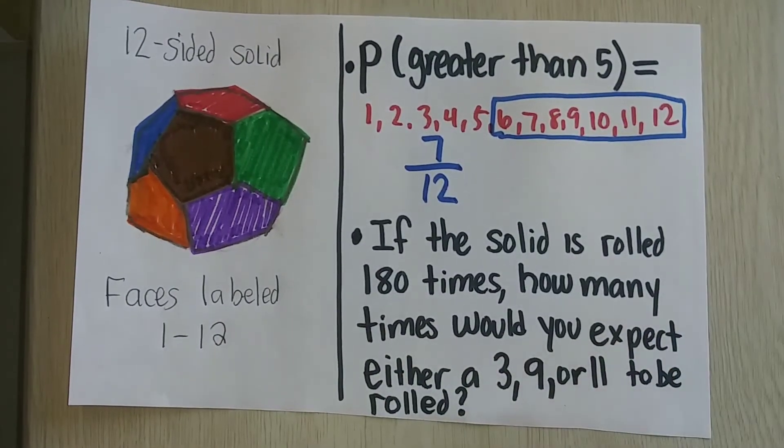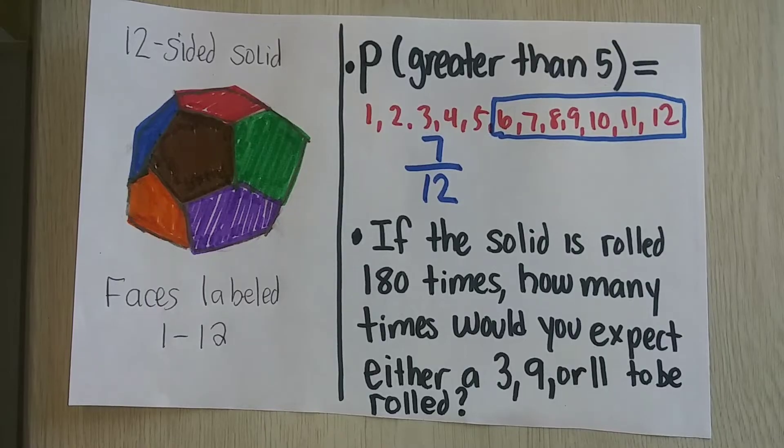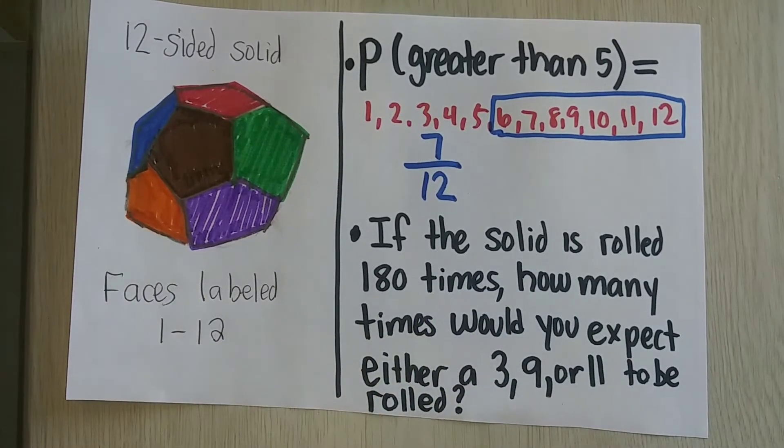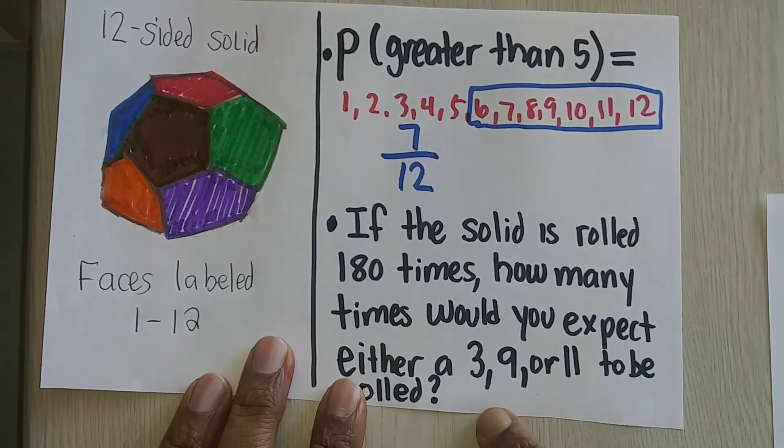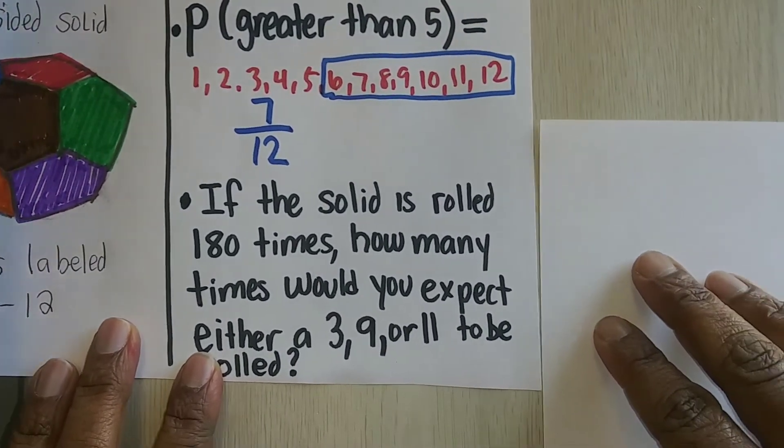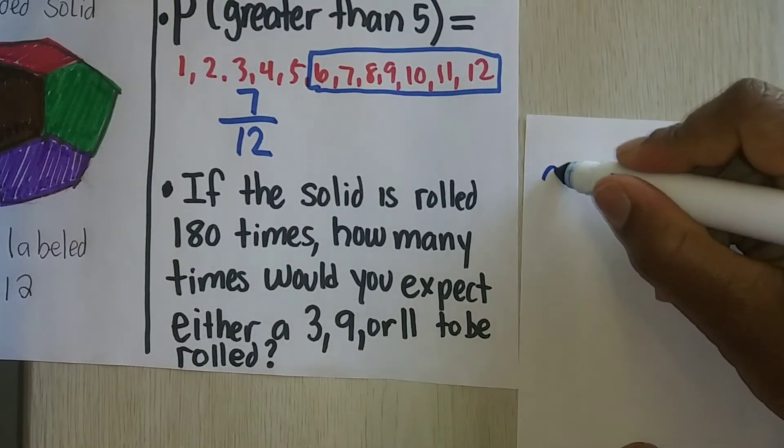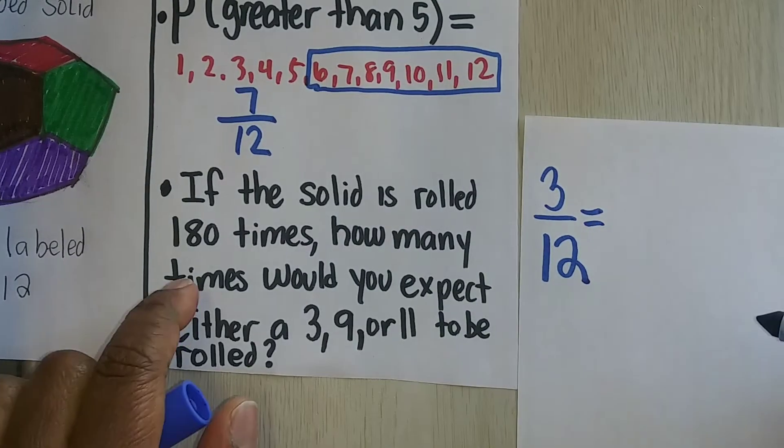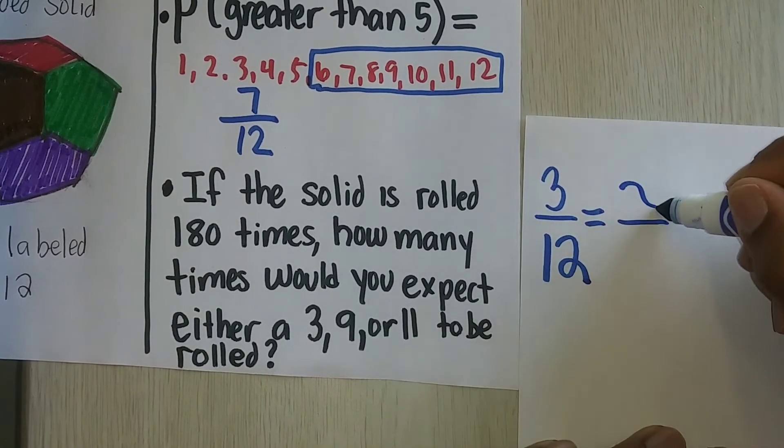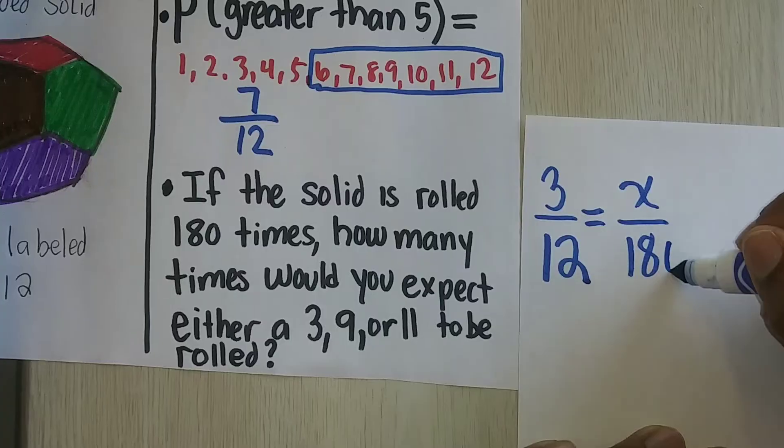Now, if the solid is rolled 180 times, how many times would you expect either a 3, 9, or 11? Well, that's 3 different options when you talk about a 3, 9, or 11. So that's 3 different options out of the 12 original. Now, if I want to go 180 times, I'm going to set this one up like a proportion as well.